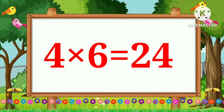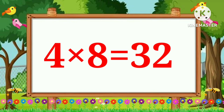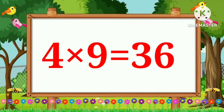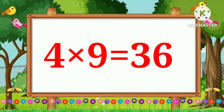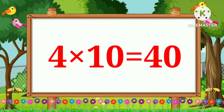4 sixes are 24, 4 sevens are 28, 4 eights are 32, 4 nines are 36, 4 tens are 40.